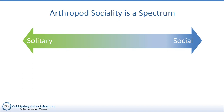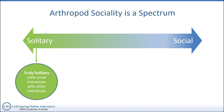Before we look at some examples of sociality in insects and other arthropods, I wanted to go through this concept of the sociality spectrum. On the board, we have a range of behaviors that fall into this spectrum. At the far left, we have truly solitary arthropods — those that exhibit little or no social interaction with other individuals of the same species, excluding things like courtship.